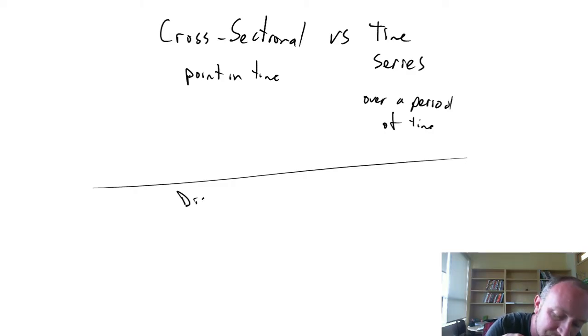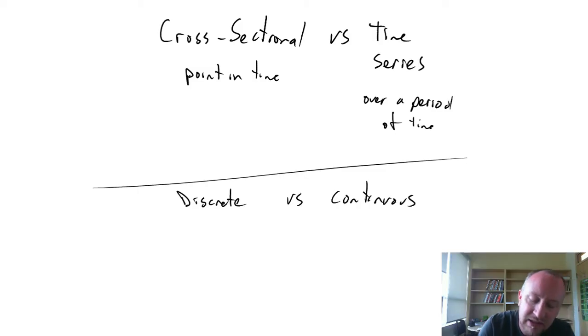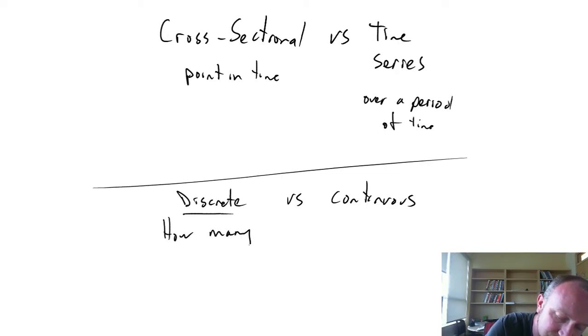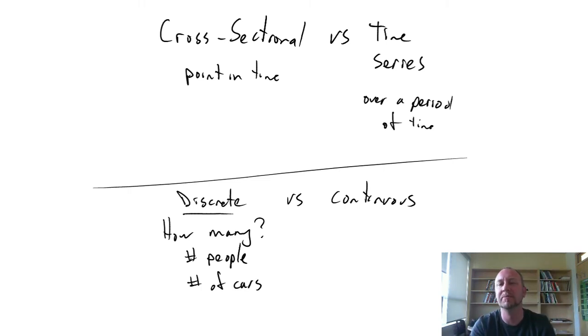So when we consider something that is a discrete variable, this is often referred to as answering the question 'how many?' So for example, number of people, number of cars—these are whole objects. I can't divide these up into fractions. There's five people, there's ten cars. That's a discrete variable.